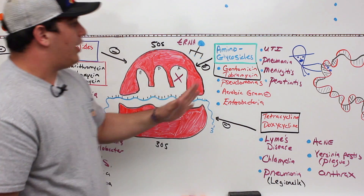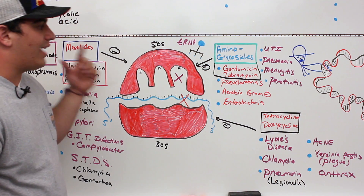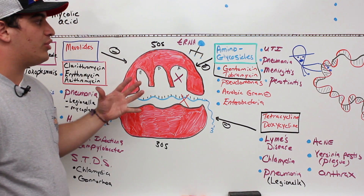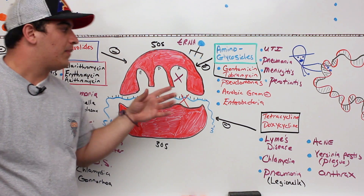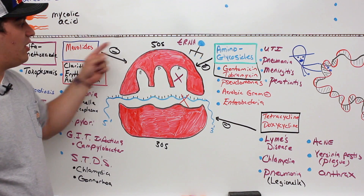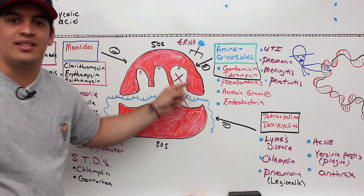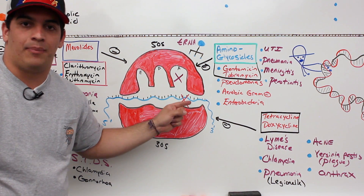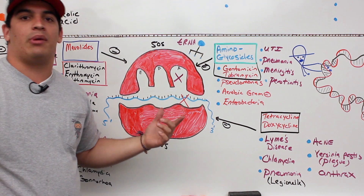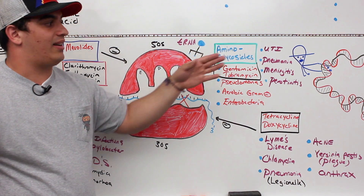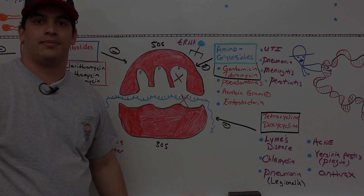In this video we talked about the antibiotics used to treat bacterial infections by targeting the protein synthesis pathway. In the next video we'll talk about the antibiotics that affect DNA and RNA synthesis.